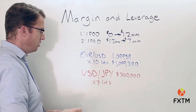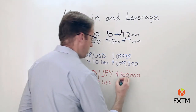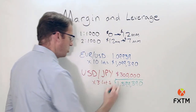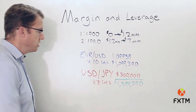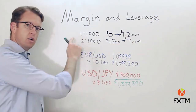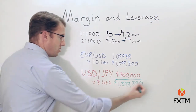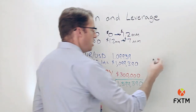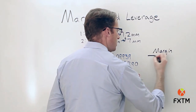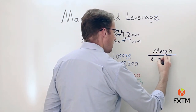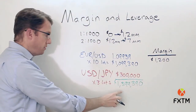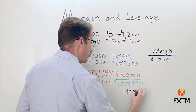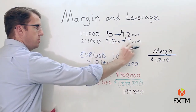So between the two positions, our total notional value is $1,399,390. Now here's where we have to do some calculation, because we know that of this amount, up to 1.2 million dollars is at the 1 to 1,000 leverage ratio. So 1.2 million times 0.001 gives us a margin requirement of $1,200 for that portion — but that only covers 1.2 million of our total $1,399,390.